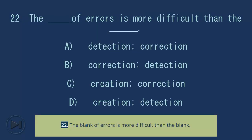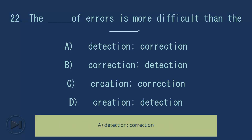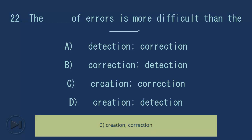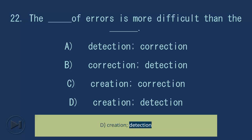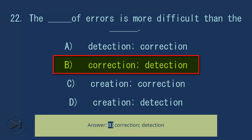Question 22: The blank of errors is more difficult than blank. A) detection, correction; B) correction, detection; C) creation, correction; D) creation, detection. Answer: B, correction, detection.